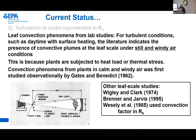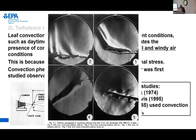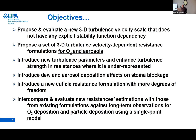Coming to the quasi-laminar boundary layer resistance: long-time-back experiments showed impacts of daytime heating and summertime conditions — a snapshot photograph shows convective plumes moving away from the leaf under calm and windy conditions. There are other studies focusing on this, but the current formulation does not take these effects into consideration. The overall objectives are to propose and evaluate a new 3D turbulence velocity scale that does not have explicit dependence on stability functions.